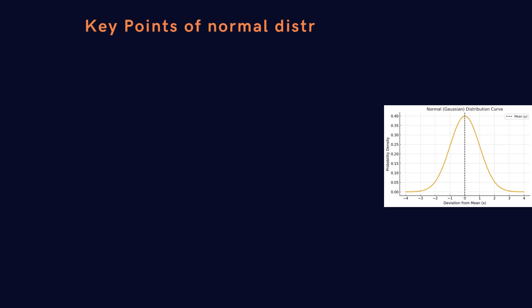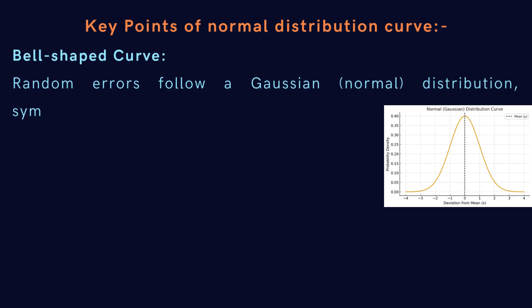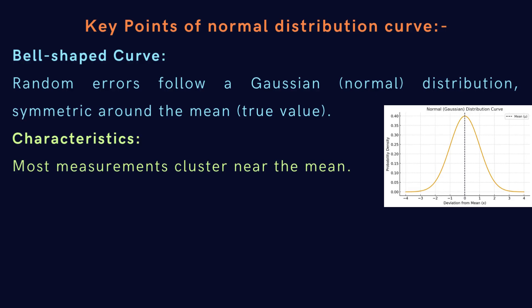Let's discuss the important points of the normal distribution curve. The bell-shaped curve represents random errors following a Gaussian or normal distribution, which is symmetric around the mean or true value. Key characteristics include: most measurements cluster near the mean, fewer measurements lie far from the mean.